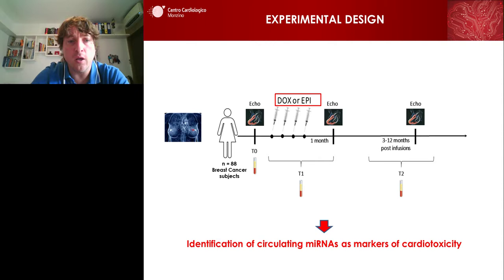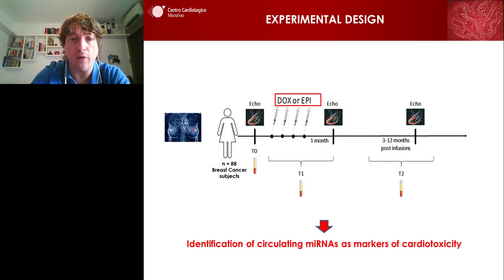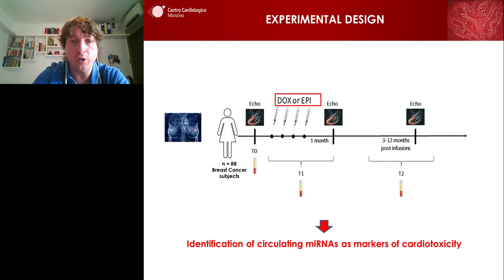Here is our experimental design. We collected samples from 88 breast cancer subjects. These subjects were evaluated for cardiac function before treatment with either doxorubicin or epirubicin, which are two anthracyclines, and we obtained blood samples. The subjects were monitored and treated, and we obtained samples during and after treatment. So we have three time points: T0, which is the baseline before treatment; T1, during treatment and one month after; and the follow-up, which is three to twelve months after the last infusion of doxorubicin.